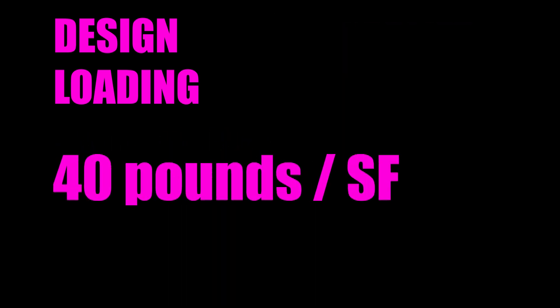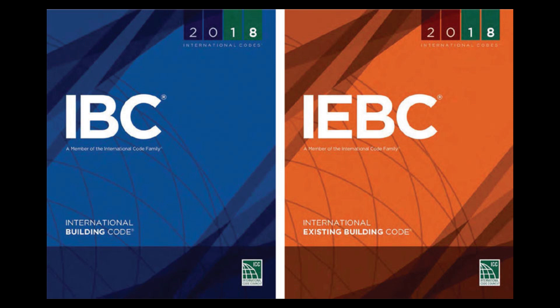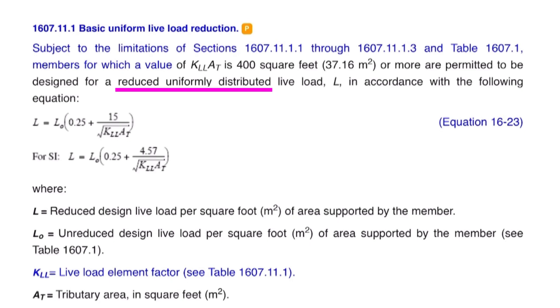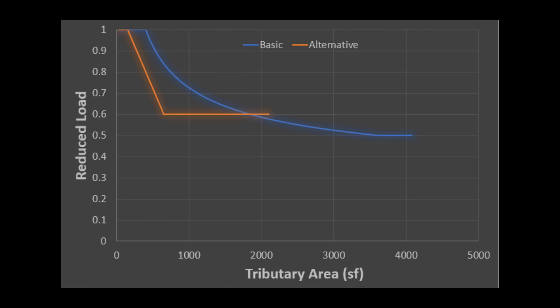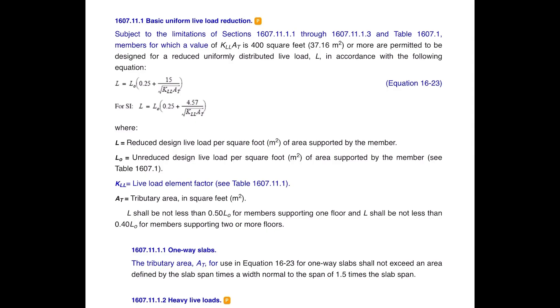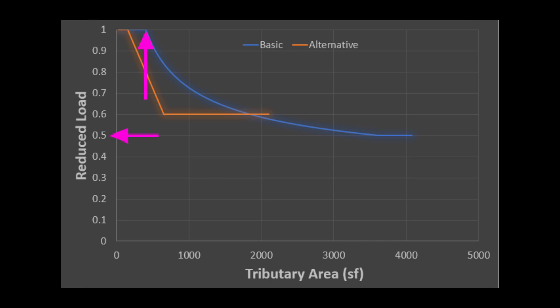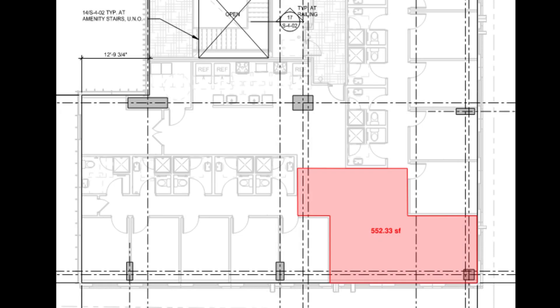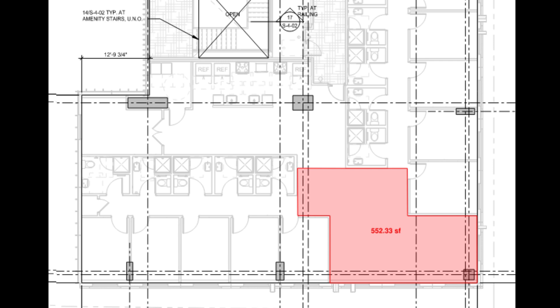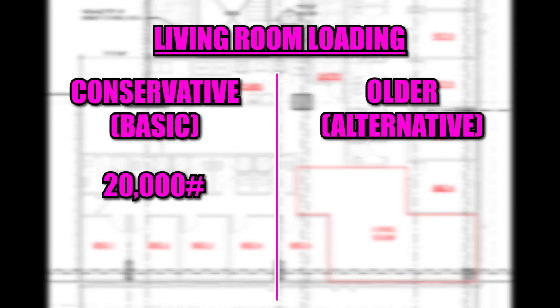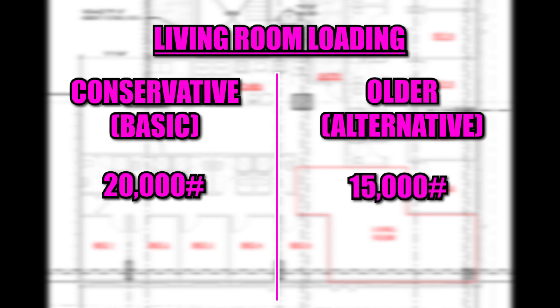Starting with 40 PSF — one more thing. The building code also allows, and engineers do often take advantage of, a couple of different methods of reducing the amount of design live load based on the tributary area, defined as the square footage of a slab region between supports — in our case, columns. There's an older method that allows reductions up to 40% starting at 150 square feet of tributary area. My preferred method allows up to 50% reduction, but beginning at 400 square feet. So for a room that's 550 square feet, we could be designing for a total of 20,000 pounds for the conservative method, or 15,000 for the older method.